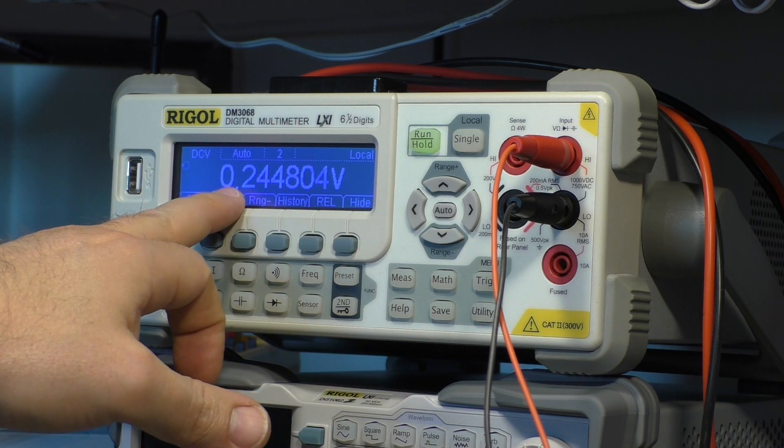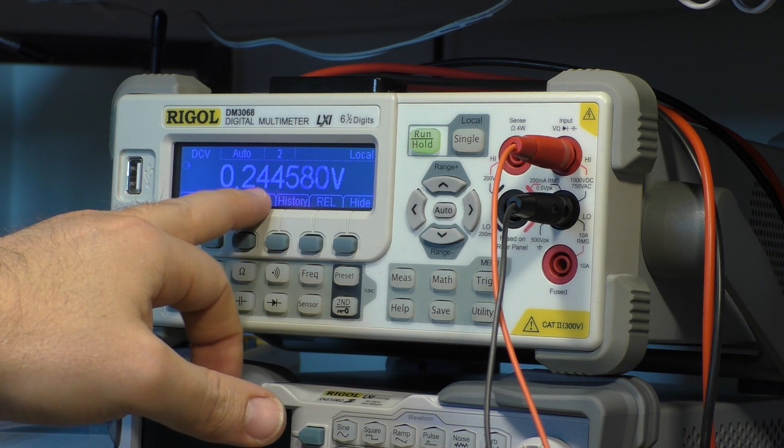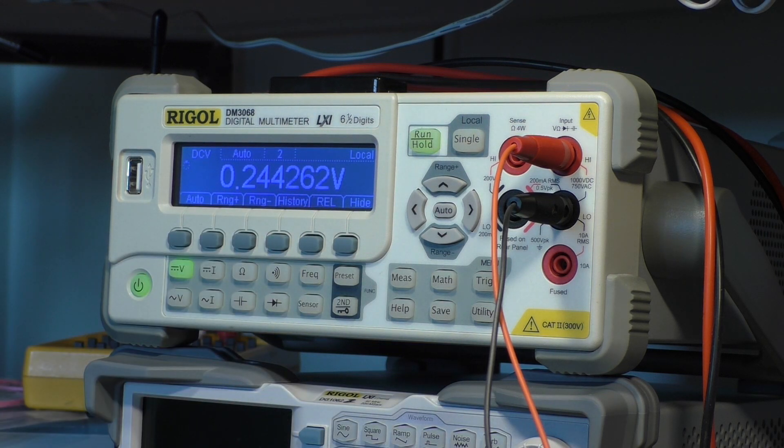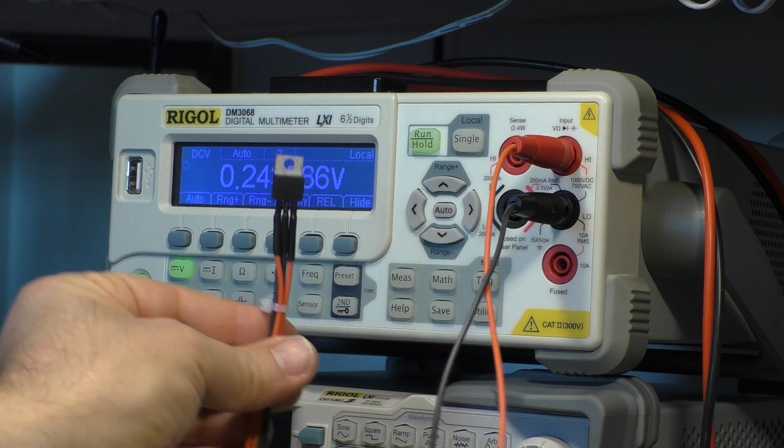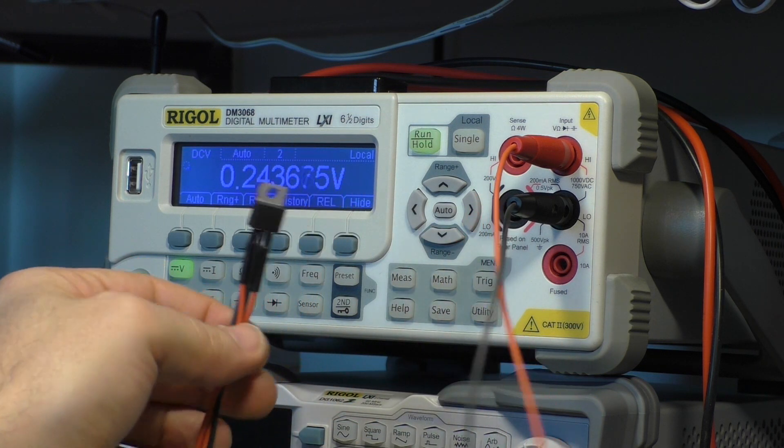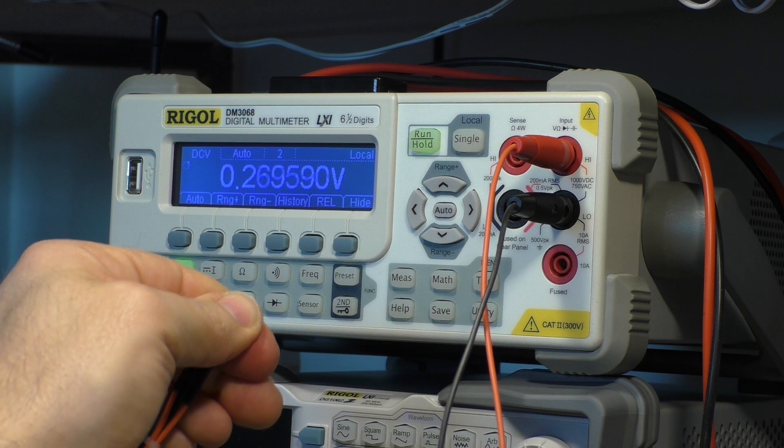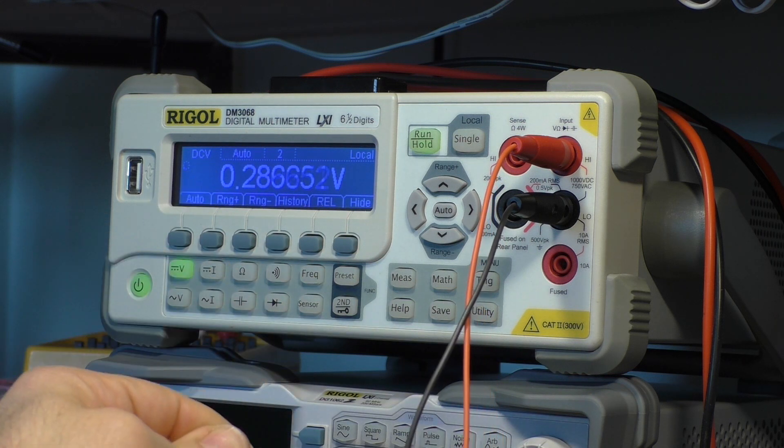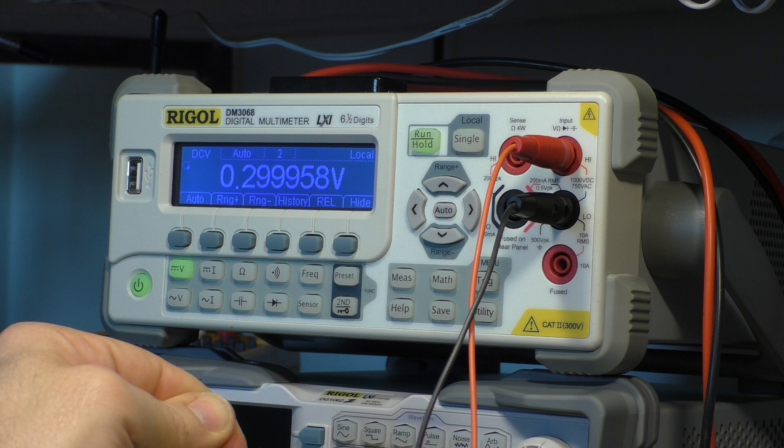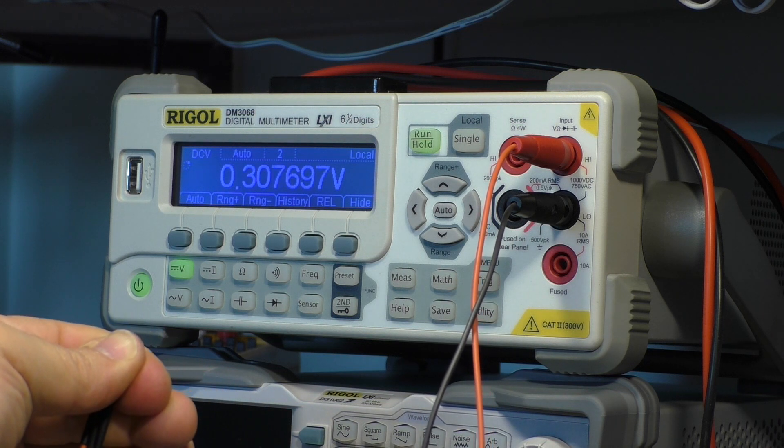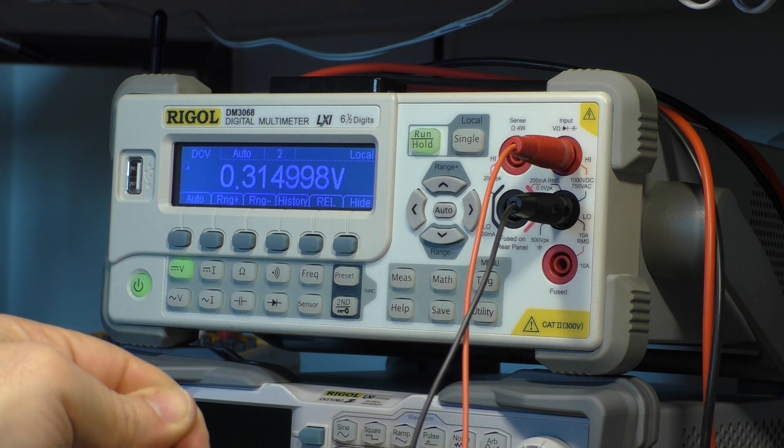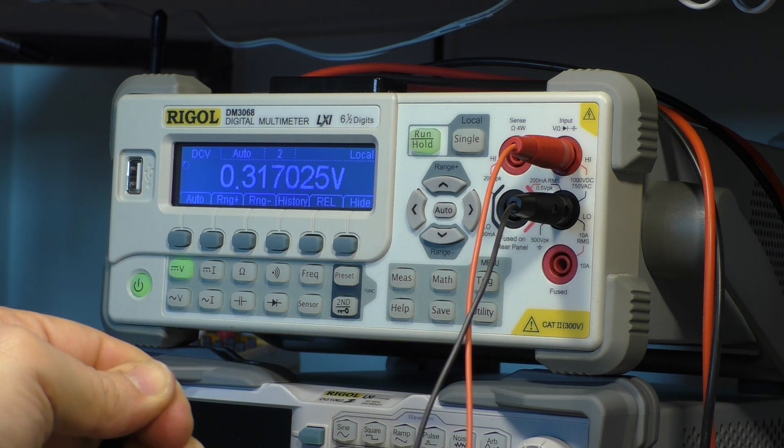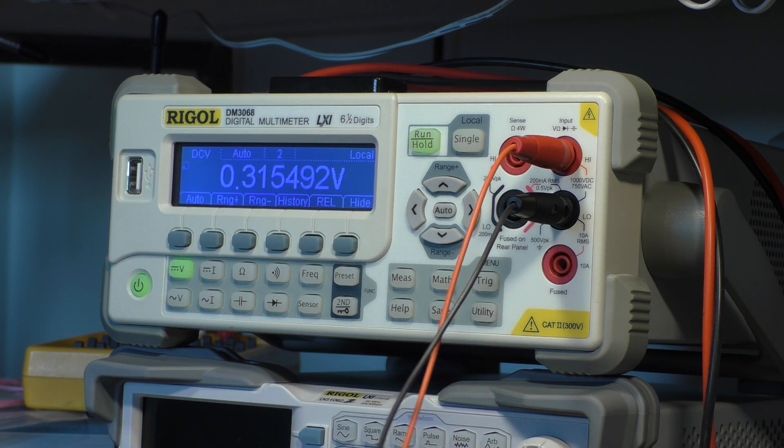Now we can see 0.244 volts. That means we have exactly 24.4 degrees Celsius here inside this room or at least here on this thermosensor. And if I hold it with my finger you can see temperature goes up 29, 30 degrees. The output is 10 millivolt per degree. So 310 millivolts would be 31 degrees Celsius. And that's it.